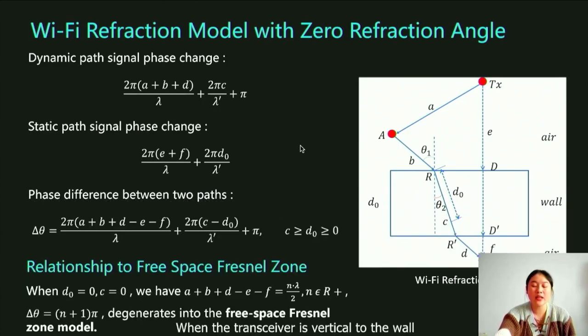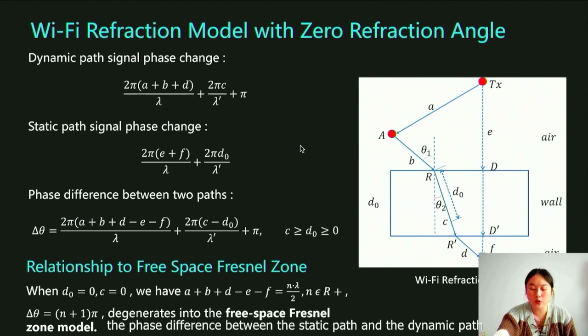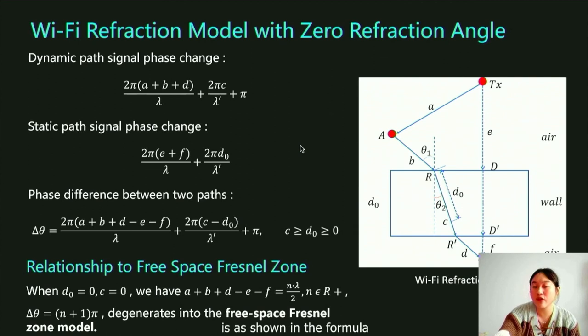When the transceiver is vertical to the wall, according to the Fresnel zone principle and the influence of the wall on the signal, the phase difference between the static path and the dynamic path is as shown in the formula.